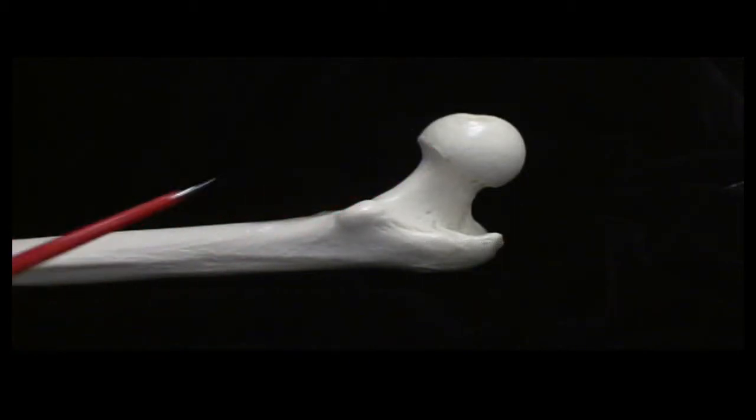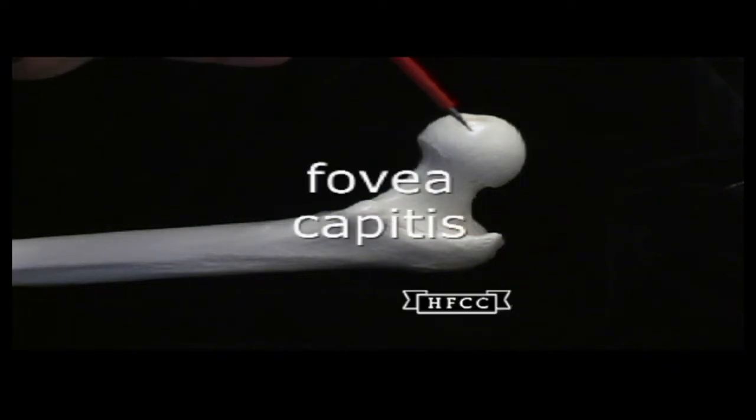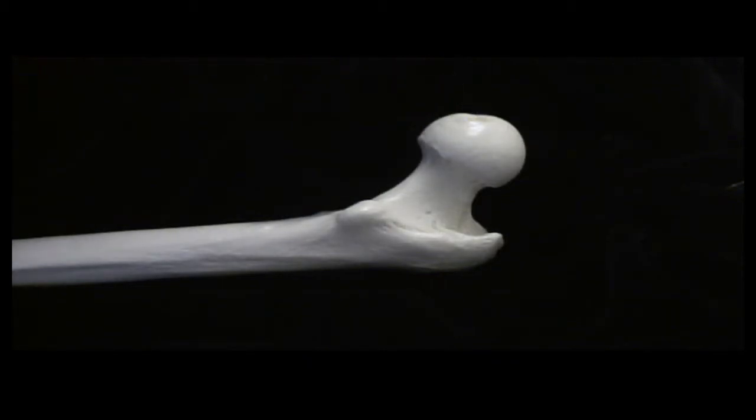But in this case we're going to see a slight indentation here that I'll be pointing to. It's a fovea capitis and there will be a ligament that helps that head of the femur stay somewhat attached to the acetabulum of the hip bone.